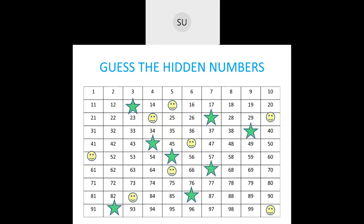What number is hidden behind the star? After 7 we have the number 8. Then we have 9, 10, 11, 12. What number comes after 12? The number after 12 is 13. Then 14 — what number comes after 14? We have 15, then 16, 17, 18, 19, 20. Then 21, 22, 23, and what number comes after 23? We have 24, then 25, 26, 27, 28, 29. What is the number after 29? It is 30.